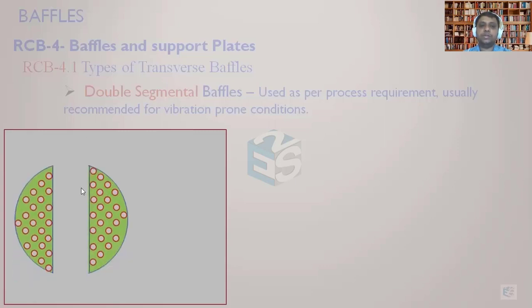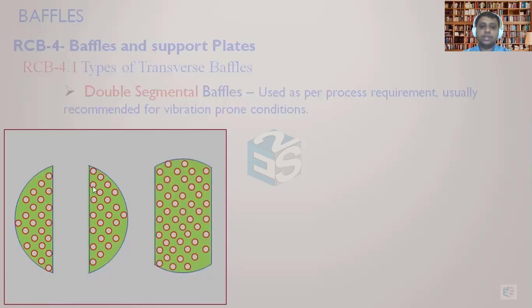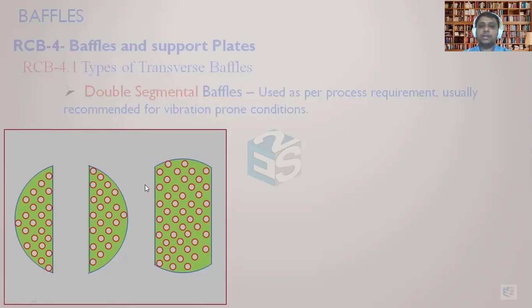Now, how do double segmental baffles look? Why is it called double segmental? Because a middle cut is made. The first baffle arrangement has two cuts — two portions: one on this side and another on this side. After that, there will be an overlapping baffle. So this is the first baffle arrangement and this is the second baffle arrangement, done in two different segments. That's the reason why it is called double segmental baffles.